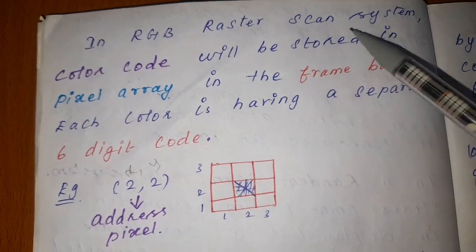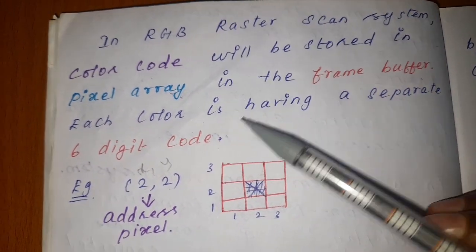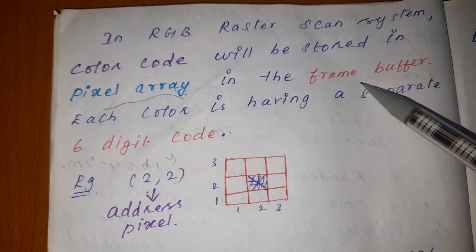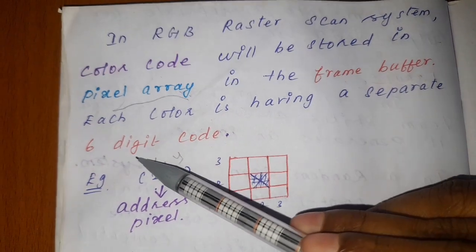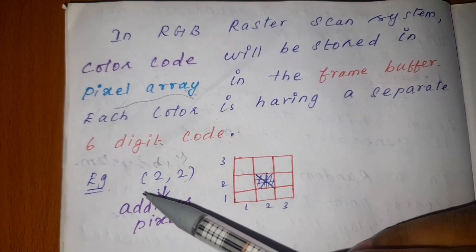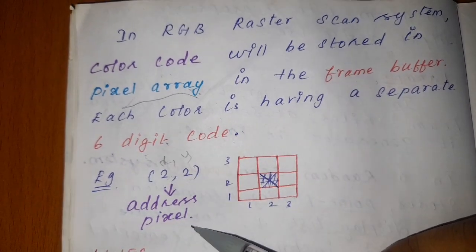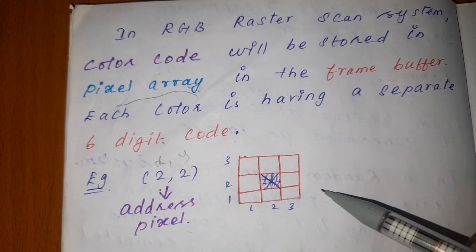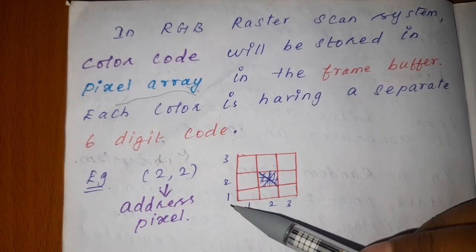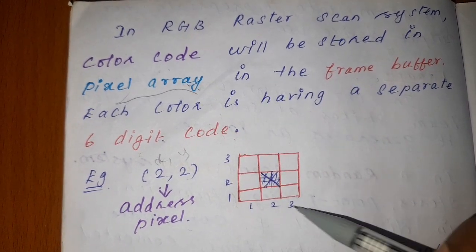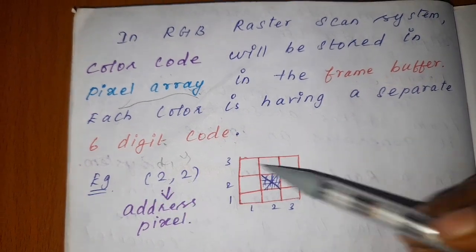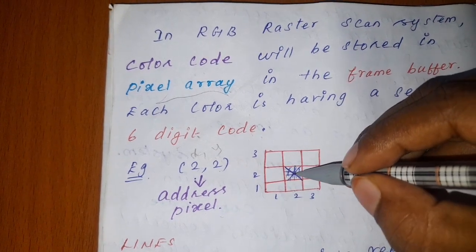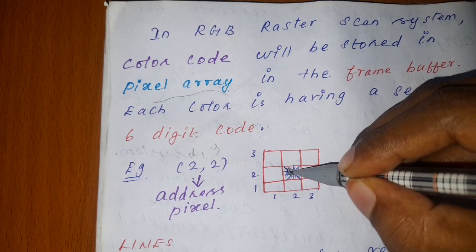In an RGB raster scan color system, the color is stored in the form of a pixel array in the frame buffer. Each color has a separate 6-bit code. For example, the address (2, 2) is the pixel address of a point, with x-axis and y-axis values. If we plot (2, 2), we mark 2 on the x-axis and 2 on the y-axis — that is the particular point in the graph.